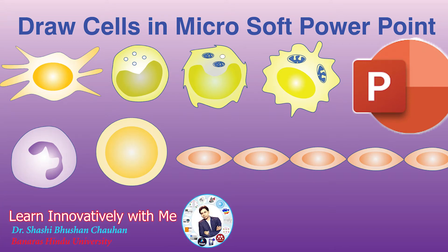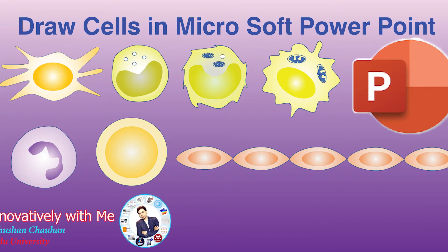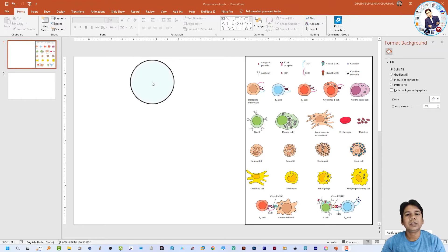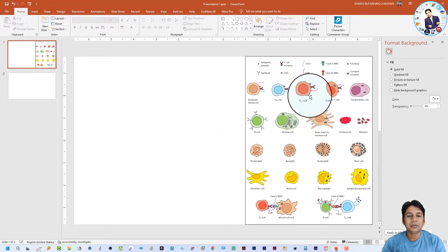Hello friend, welcome to my channel 'Learn Innovatively with Me'. My name is Sasi Bhushar Johan. Today I am going to show you how you can draw different types of cell structures in Microsoft PowerPoint very easily in vector format, just like Adobe Illustrator, Inkscape, or Bynder. You can see on my laptop screen I have already taken a picture from an immunology book showing different types of cell structures.